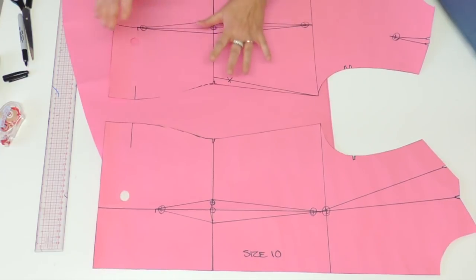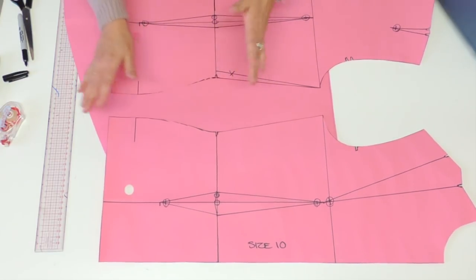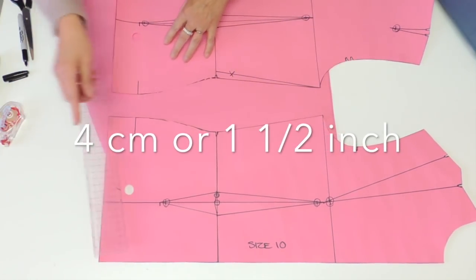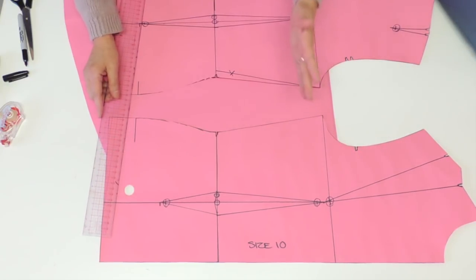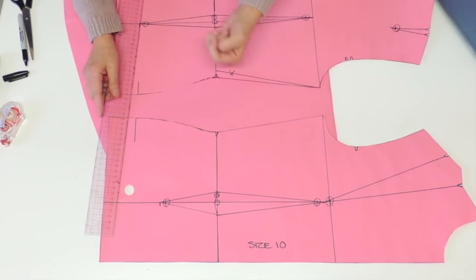So let's say for example that your hip is four centimeters bigger than your bust measurement. Four centimeters all around.